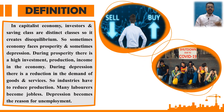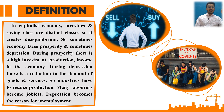Now, what is the definition? In a capitalist economy, investors and the saving class are distinct classes. This creates disequilibrium, so sometimes the economy phases prosperity and sometimes depression. During prosperity, there is high investment, production, and income in the economy. During depression, there is a reduction in the demand for goods and services, so industries have to reduce production, many laborers become jobless, and depression becomes a reason for unemployment.